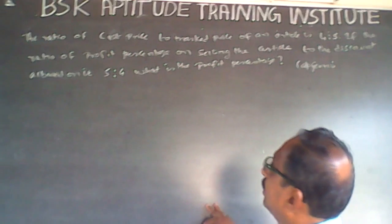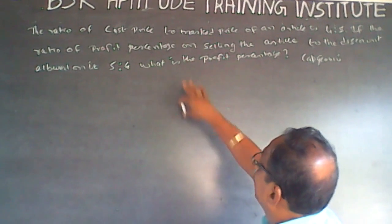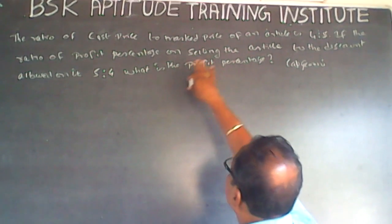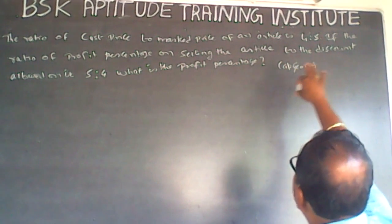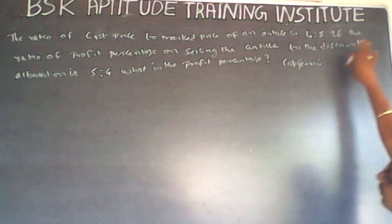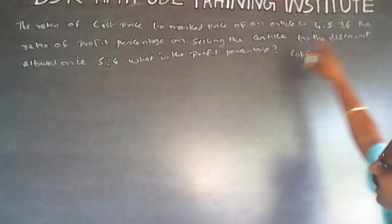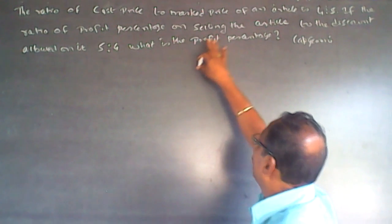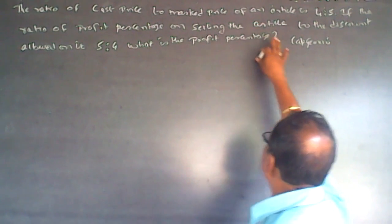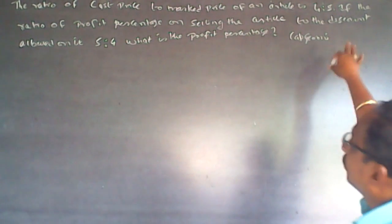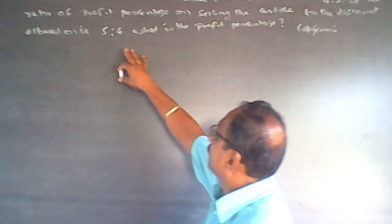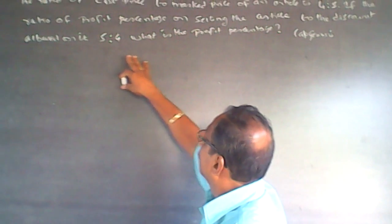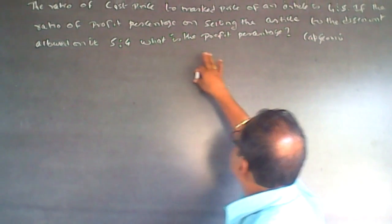The question is: the ratio of cost price to mark price of an article is 4 to 5. If the ratio of profit percentage on selling the article to the discount allowed on it is 5 to 4, what is the profit percentage?